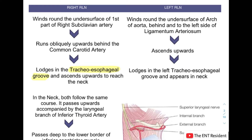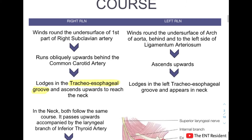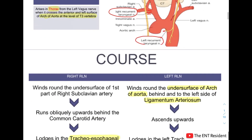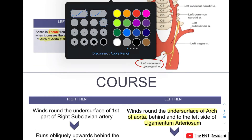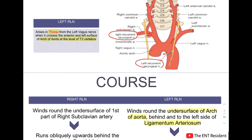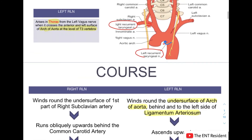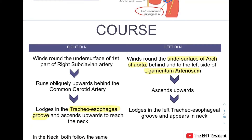On the left side, the recurrent laryngeal nerve winds around the undersurface of the arch of aorta, behind and to the left side of the ligamentum arteriosum, as seen in the picture. It then ascends upwards and lodges in the left tracheoesophageal groove, appearing in the neck.